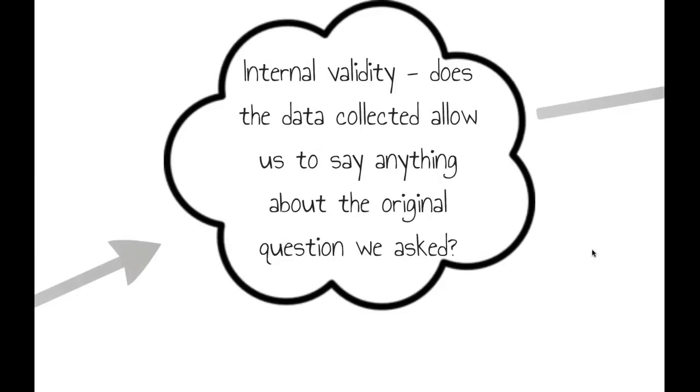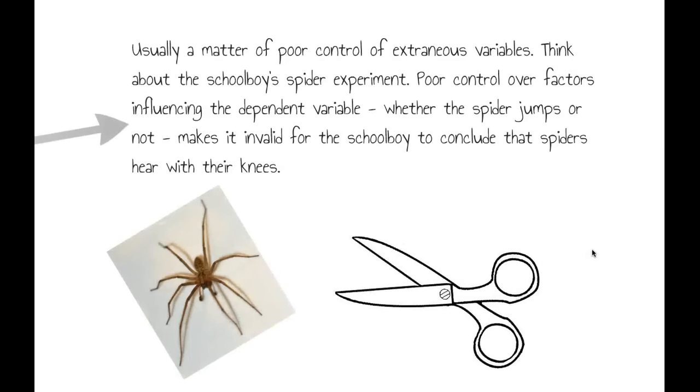So here's some ways in which we can get it. Internal validity: does the data collected allow us to say anything about the original question asked? It's sometimes down to poor control of extraneous variables. Think about the schoolboy's spider experiment.